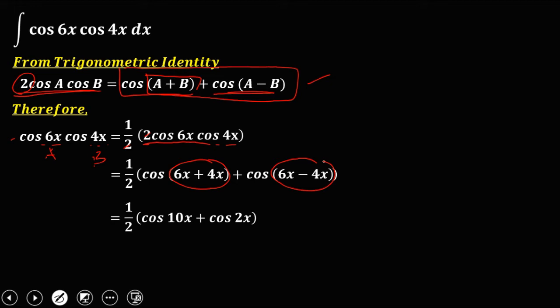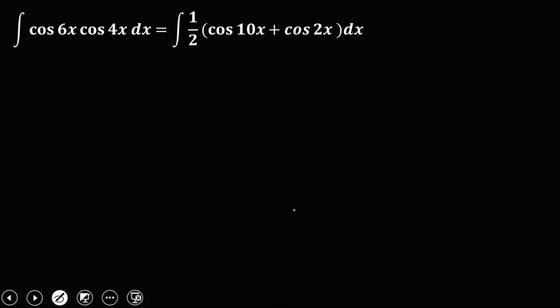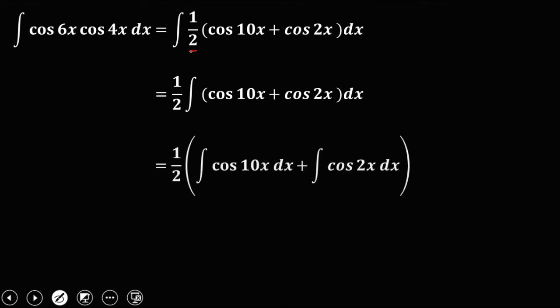Therefore, cosine 6x cosine 4x is equal to 1 half times (cosine 10x plus cosine 2x). This is the new equation. Putting the constant outside, we have 1 half times the integral of (cosine 10x plus cosine 2x). Integrating every term, we have 1 half times the integral of cosine 10x plus the integral of cosine 2x.